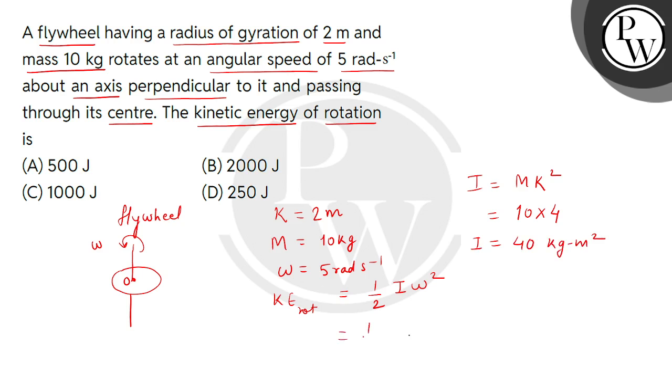So, यह आजाएगा half multiplied by 40, multiplied by 5 square, it means क्या आएगा 25. So, यह आजाएगा 20 multiplied 25, it means 500 joule.